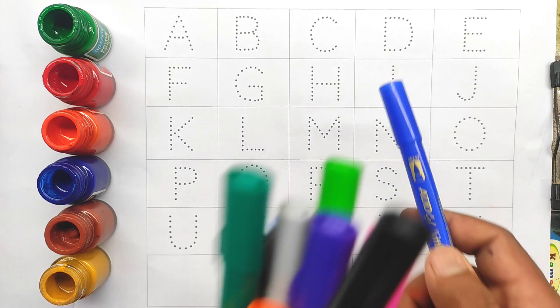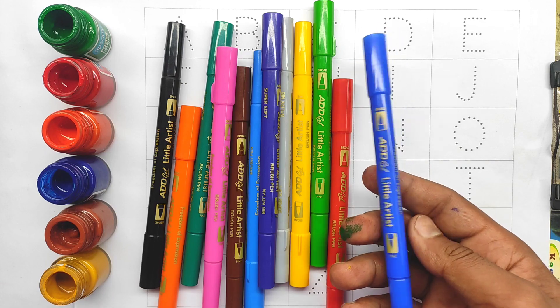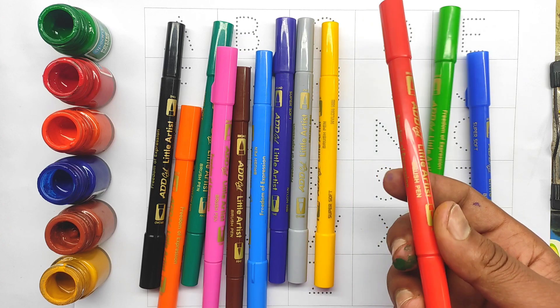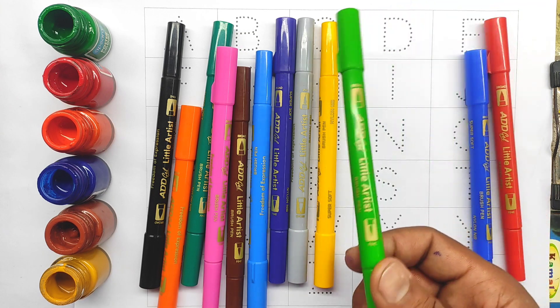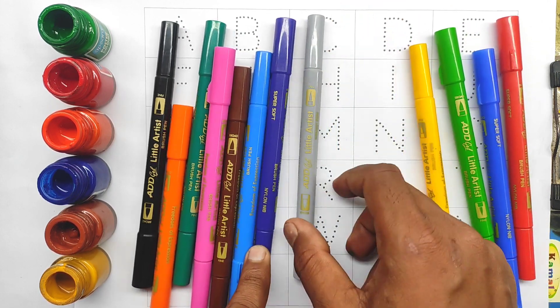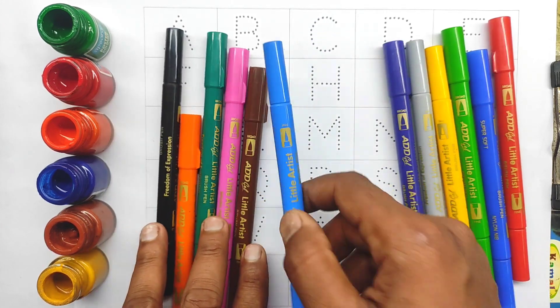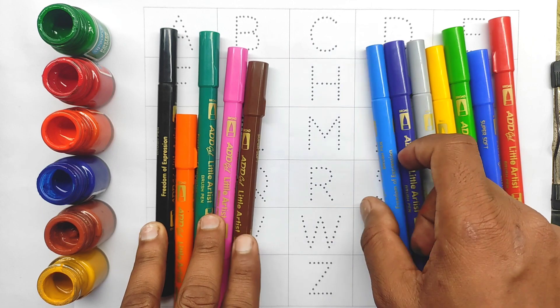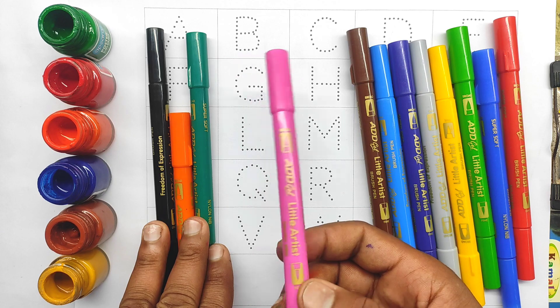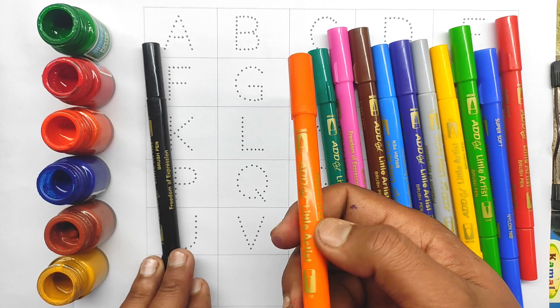This is color learning to colors name. This is blue color, this is red color, this is green, light green, yellow, silver, purple color, sky blue color, brown color, this is pink color, this is green color, orange color.